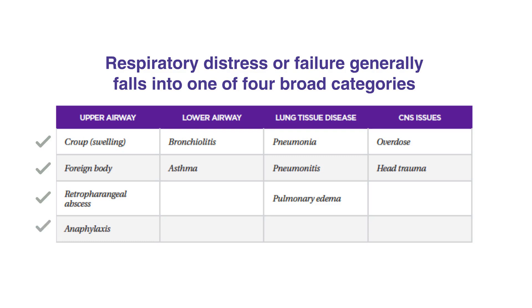In the lower airway, distress or failure can be caused by bronchiolitis and/or asthma. Lung tissue disease can be caused by pneumonia, pneumonitis, and/or pulmonary edema.